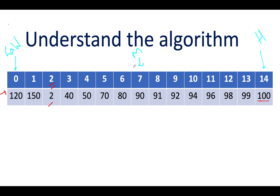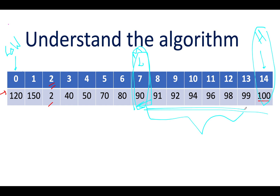In this first iteration, the middle element happens to be lower than the highest element. This signifies that the elements from the middle index up to the high index are sorted, and the minimum in the complete array will be at index 2 — not in this right portion. We can discard the right part of the array and update the high pointer to mid.